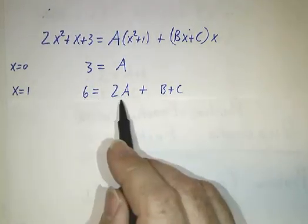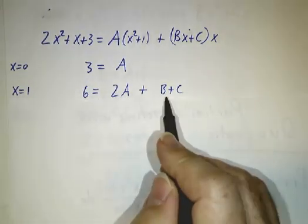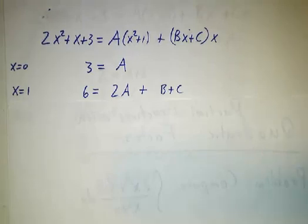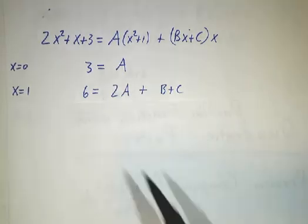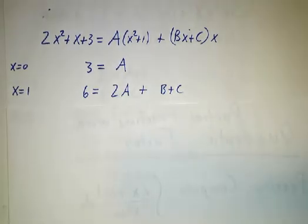You plug in 1, the left-hand side is 6. The right-hand side is 2a plus b plus c. And since a is 3, that tells you that 0 is b plus c.